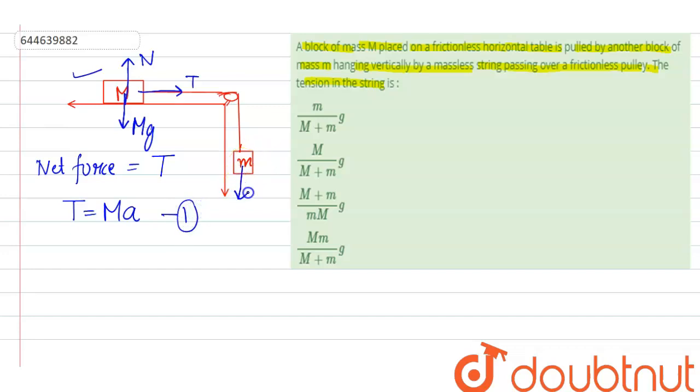Now similarly, draw the free body diagram of this body. Here, mg acts vertically downward. Tension upward. So again, if we find the net force, this time it is moving rightward. So this body is moving downward. So this time the net force equals Mg minus tension equals Ma. This is second equation.